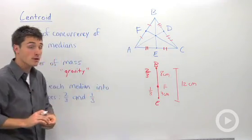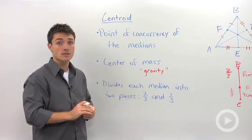So the centroid is the point of concurrency of the three medians, and it's also known as the center of mass.